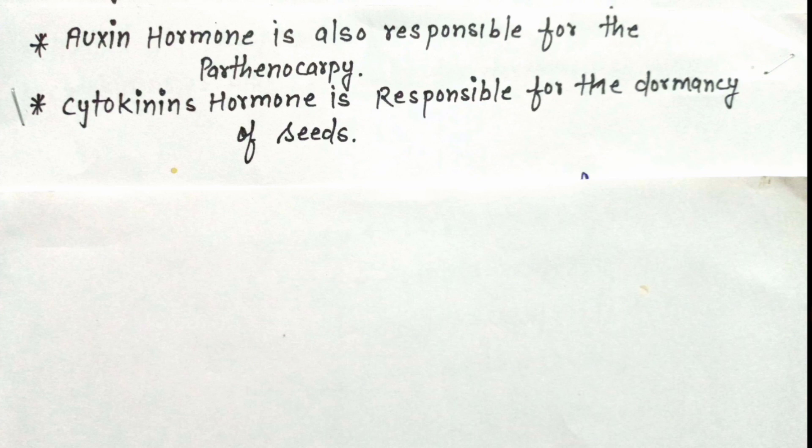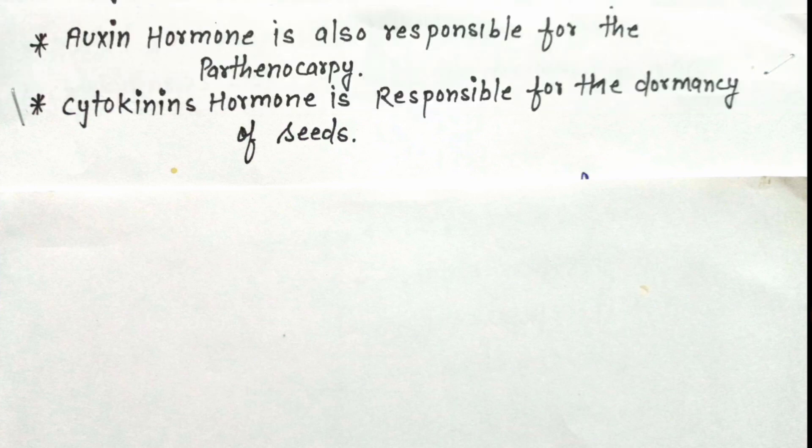Next is cytokinin hormone. Cytokinin hormone is responsible for the dormancy of seeds. Dormancy means a state of rest. Seeds remain in dormancy when they are kept in packets. Cytokinin hormone breaks this dormancy when the seeds find desirable conditions in soil, and they convert into plants. This was today's topic: plant hormones and their functions.